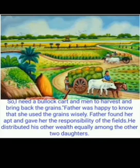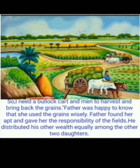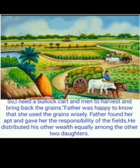Father was happy to know that she used the grains wisely. Which daughter is very wise? The third daughter is very wise — she used the grains in a very useful way. Father found her apt, meaning she was the correct person, and gave her the responsibility of the fields.